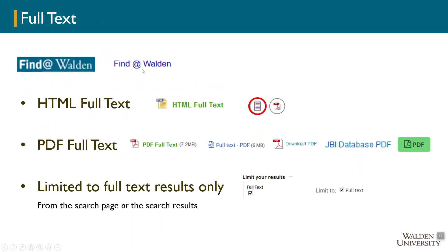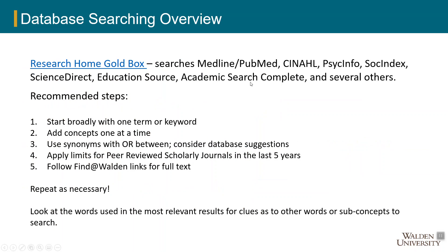When getting to full text, sometimes it requires a couple of extra clicks. If you see the Find It at Walden button, click through and look for PDF full text buttons — they have a few different looks. If you're getting stumped, check your spelling first, as the database does not autocorrect. Start broadly with one term, don't put all your words in one box like Google, use synonyms with 'or' in between, and don't get too wedded to one way of describing something.